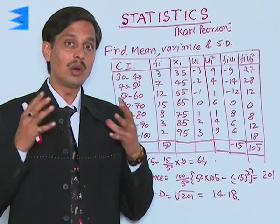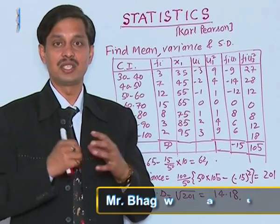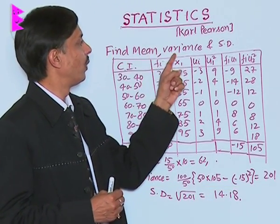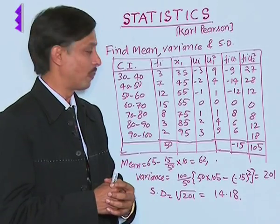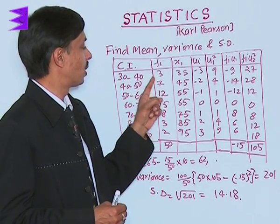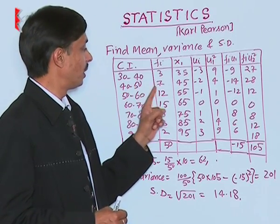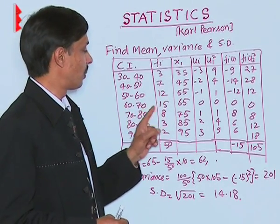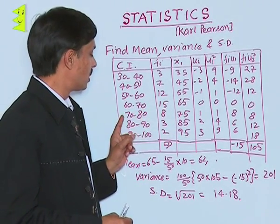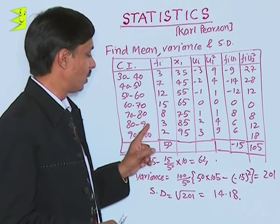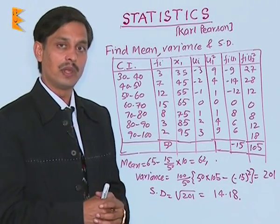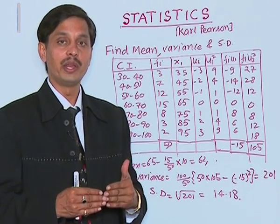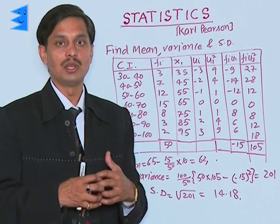Let me explain how to calculate variance and standard deviation with an example. Find the mean, variance, and standard deviation for: Classes 30-40 (f=3), 40-50 (f=7), 50-60 (f=12), 60-70 (f=15), 70-80 (f=8), 80-90 (f=3), 90-100 (f=2).